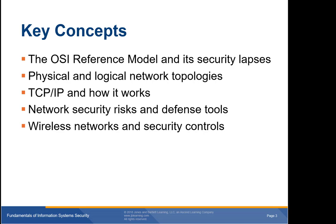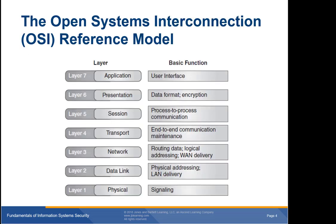Key concepts include the OSI reference model and its security lapses, physical and logical network topologies, TCP/IP and how it works, network security risks and defense tools, and wireless networks and security controls. The Open Systems Interconnection reference model, or OSI model, is a template for building and using the network and its resources. You can design technology for any one of the layers without worrying about how the other layers work.